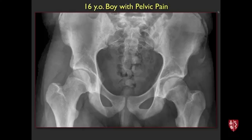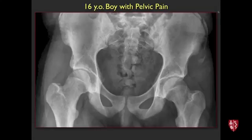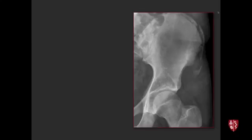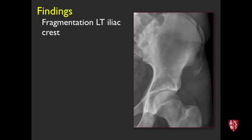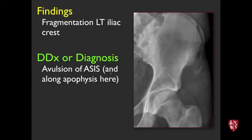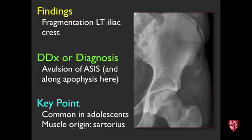Here's the first real case. What we're seeing is fragmentation along the iliac crest in this skeletally immature patient — this part is avulsed off. This is avulsion of the anterior superior iliac spine; he's avulsed off a little bit of his apophysis. Key point: fairly common in adolescence, and the muscle origin there is the sartorius.